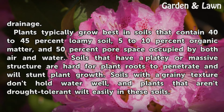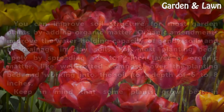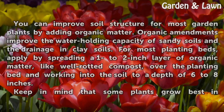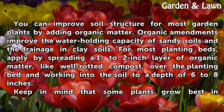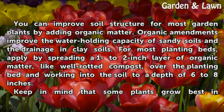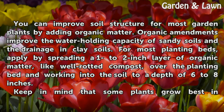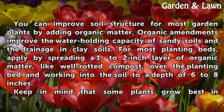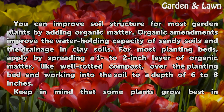Soils with a grainy texture don't hold water well, and plants that aren't drought tolerant wilt easily in those soils. You can improve soil structure for most garden plants by adding organic matter. Organic amendments improve the water-holding capacity of sandy soils and the drainage of clay soils.